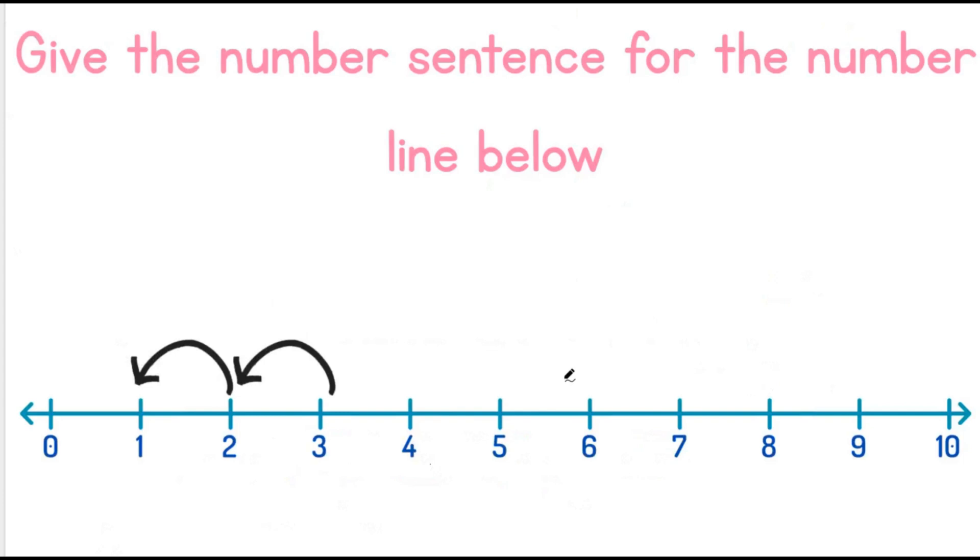Okay, so this is a little different to what we have been doing. Give the number sentence for the number line below. We've been drawing number lines according to number sentences. Now we are going to look at the number line to give us our number sentence. If we look carefully, this number line action starts at 3 and ends at 1. What does this mean?